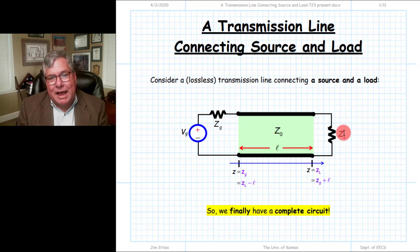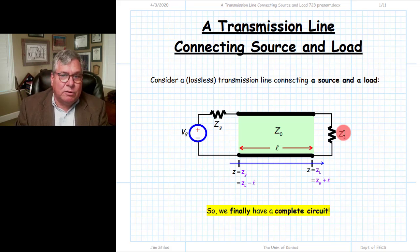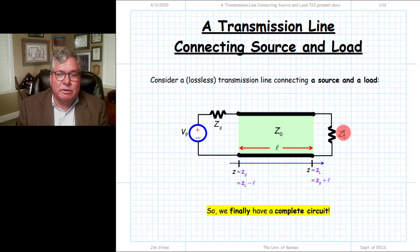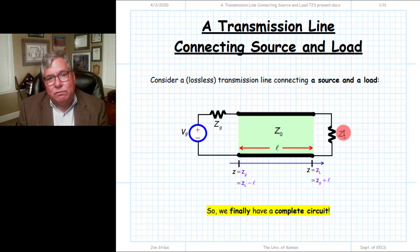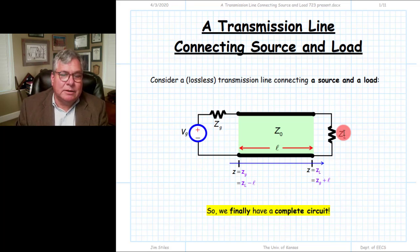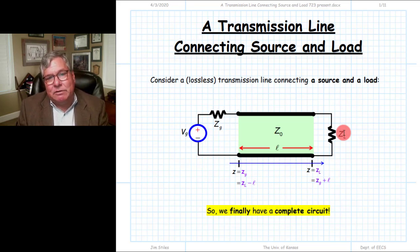There were no unknown complex wave amplitudes in the solution for the reflection coefficient or line impedance. But for total voltage, total current, plus-wave voltage, and minus-wave voltage, we found there was still one unknown. We could write the solutions in terms of one unknown wave amplitude, and we needed to evaluate the boundary condition on the other end of the line to determine it.